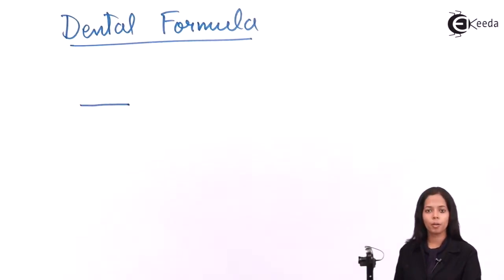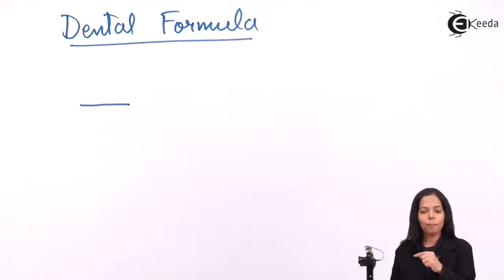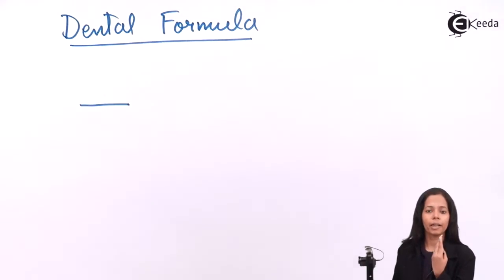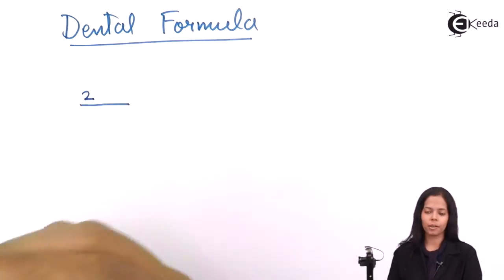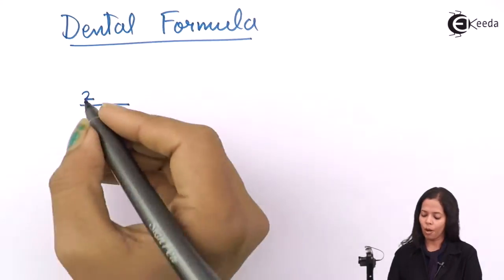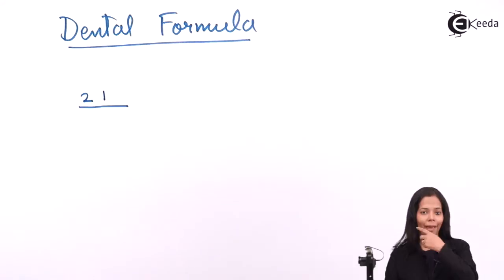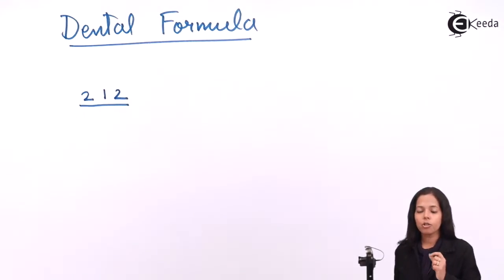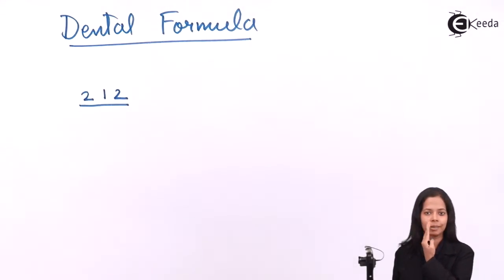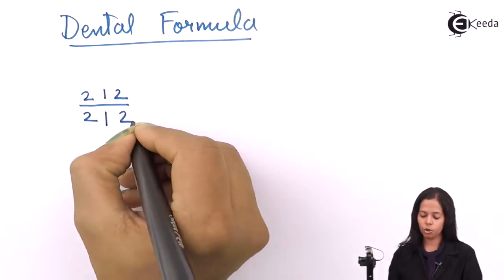The numbers written below the bar represent the set of teeth present in the mandible. I am writing the set of teeth on the right-hand side of the mouth. First comes the incisor — two incisors are present as milk teeth. One canine is present as a milk tooth in the maxillary region, and last are two molars. Notice: in case of milk teeth, there are no premolars. Speaking about the lower jaw, that is the mandible, only the right side: two incisors, one canine, and two molars.